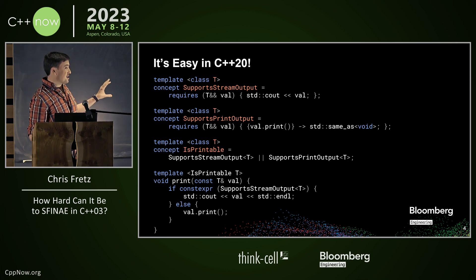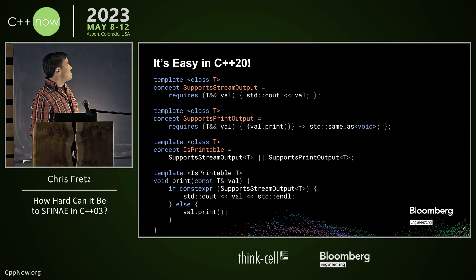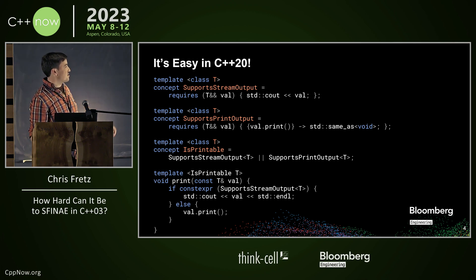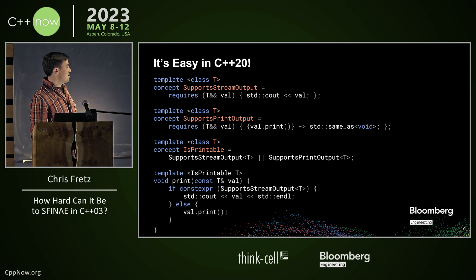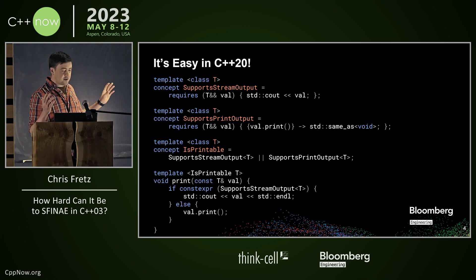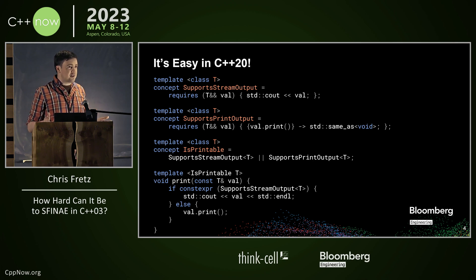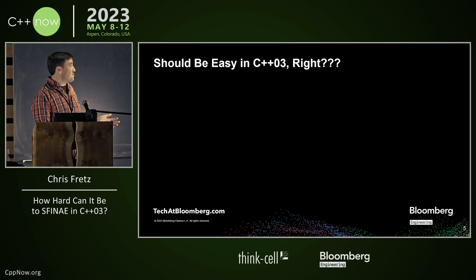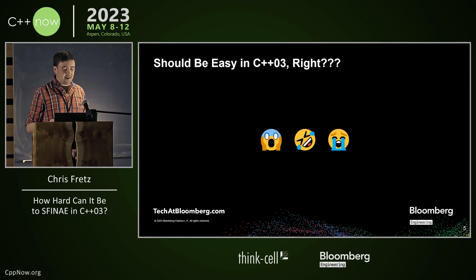These aren't exactly production-ready concepts, but it's super easy to just say what we mean. We want a thing that supports stream output — we can just actually try using the ostream operator. We want something that supports a print function that returns void — we can just say that. We can then combine these two things into a concept and take a generic parameter of that type. It all works exactly the way you would expect. Clearly, if it's super easy in C++20, it should be super easy in C++03, right? Not exactly.